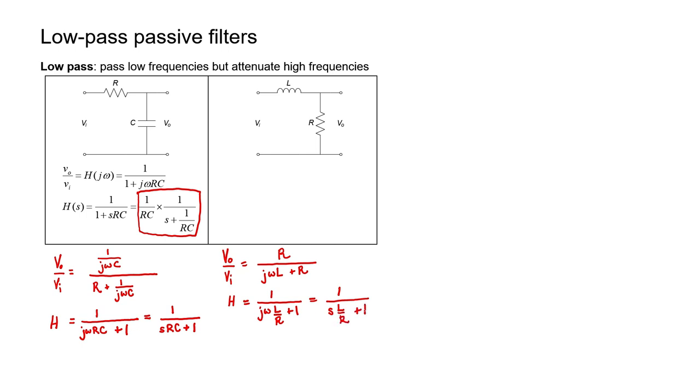Now that we have our transfer function H in terms of j omega we could alternatively write it with an s. If I try to remove any coefficient that's next to the s in this fraction, for example, by multiplying everything here times r divided by L, I'll end up with this final form of the expression.